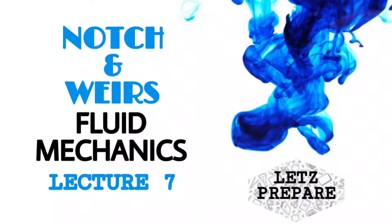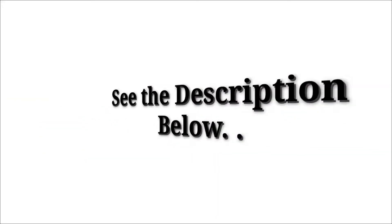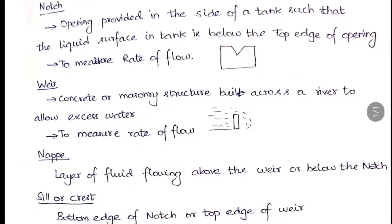Let's prepare our notches and weirs. In this lecture we are going to see about notches and weirs. First, let us see what is a notch and what is a weir. A notch is the opening provided in the side of any tank or channel such that the liquid surface in the tank is below the top edge of the opening.